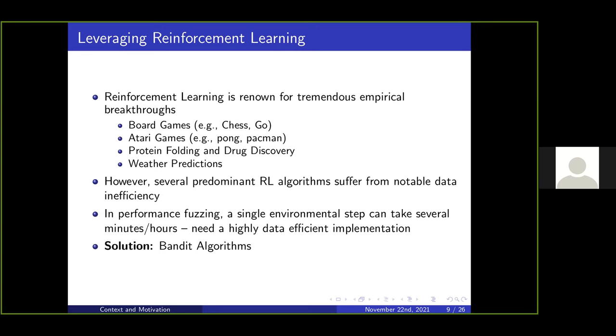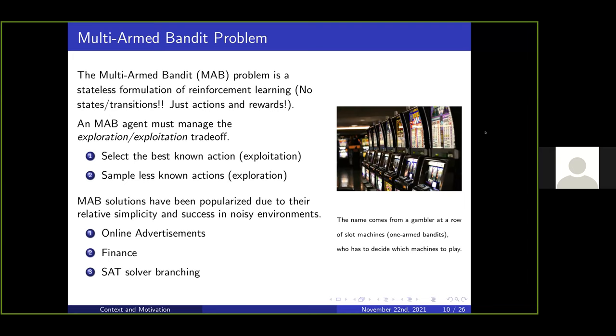However, it can be data inefficient, and there's an issue with performance fuzzing because a single environmental step can take several minutes or even an hour. You need an extremely data efficient solution. In this paper we propose the use of bandit algorithms. A bandit algorithm is the stateless formulation of reinforcement learning—there are no states or transitions, just actions and rewards. At its core, the multi-armed bandit manages an exploration versus exploitation trade-off. MABs have been very popular due to their simplicity and success in extremely noisy environments.